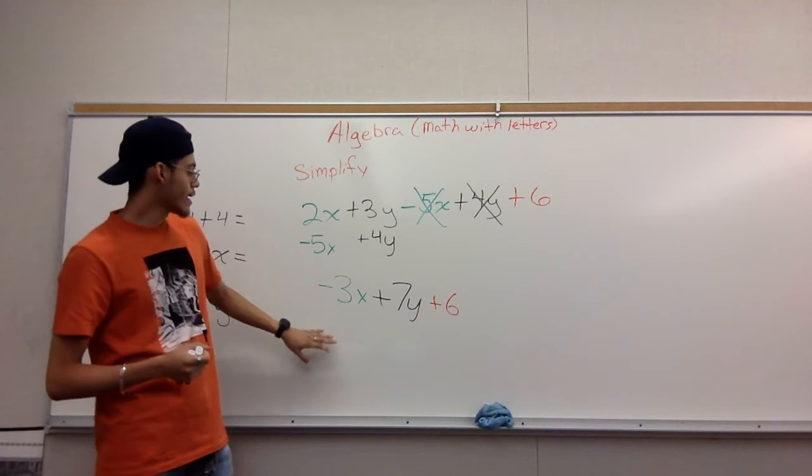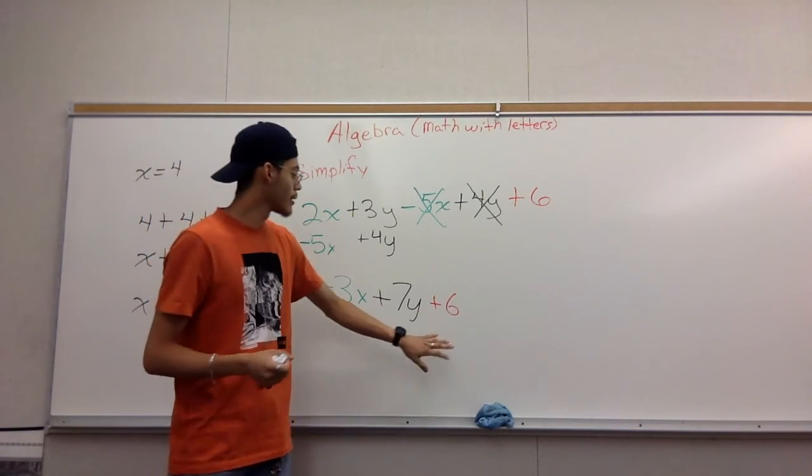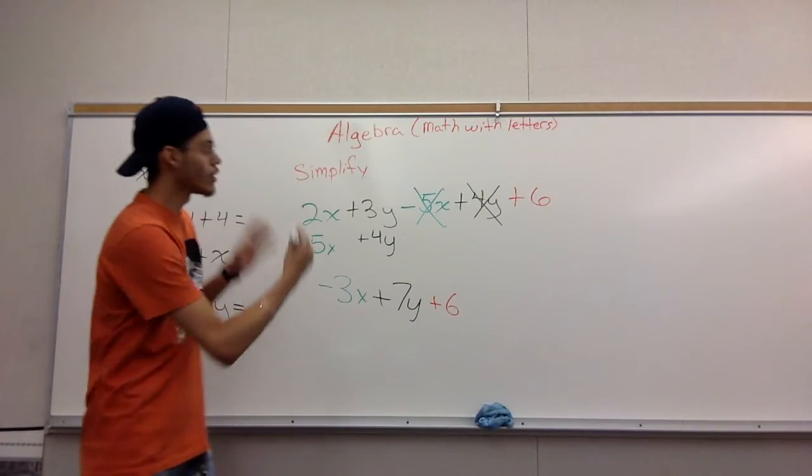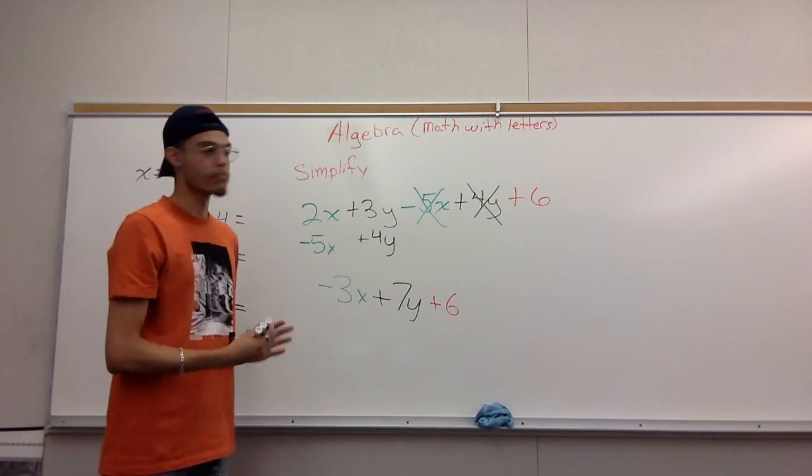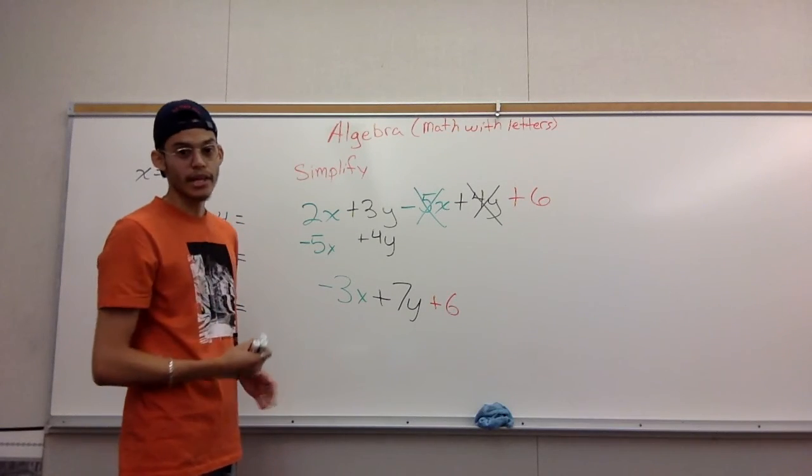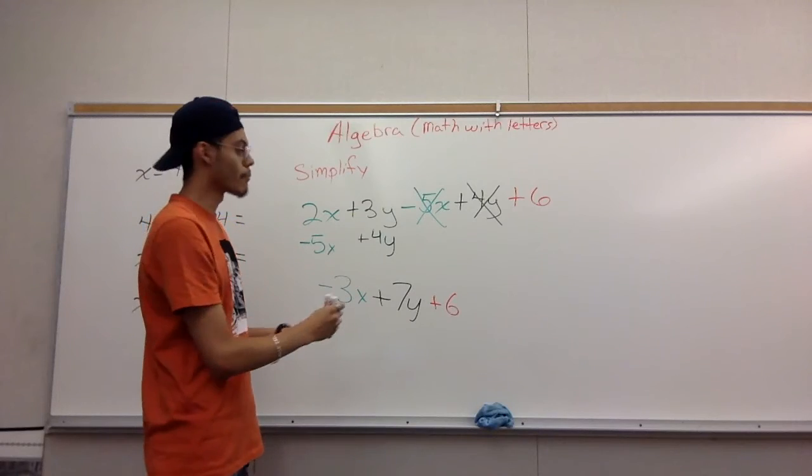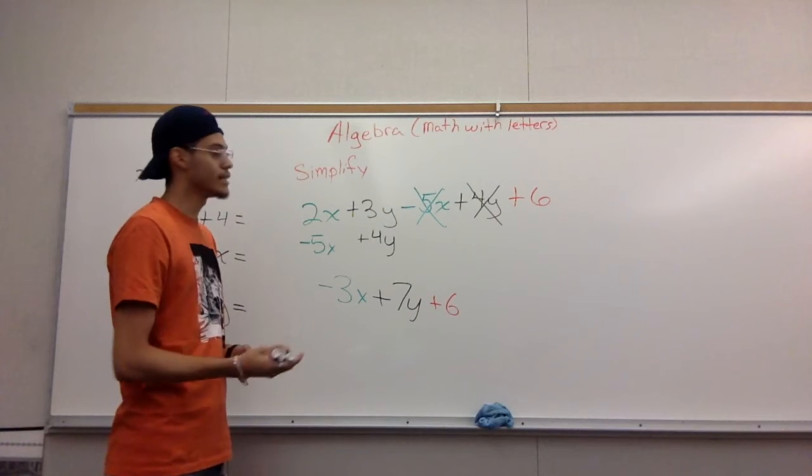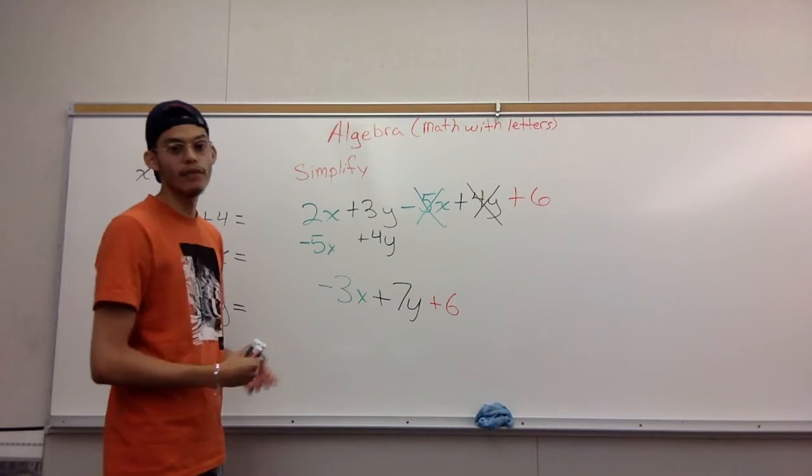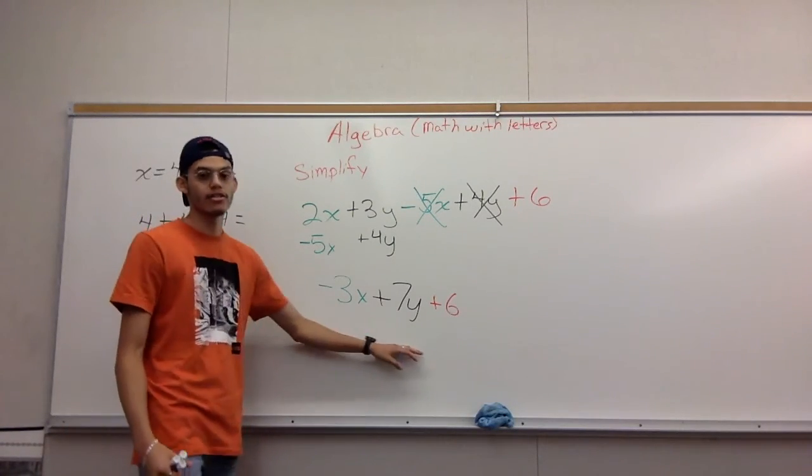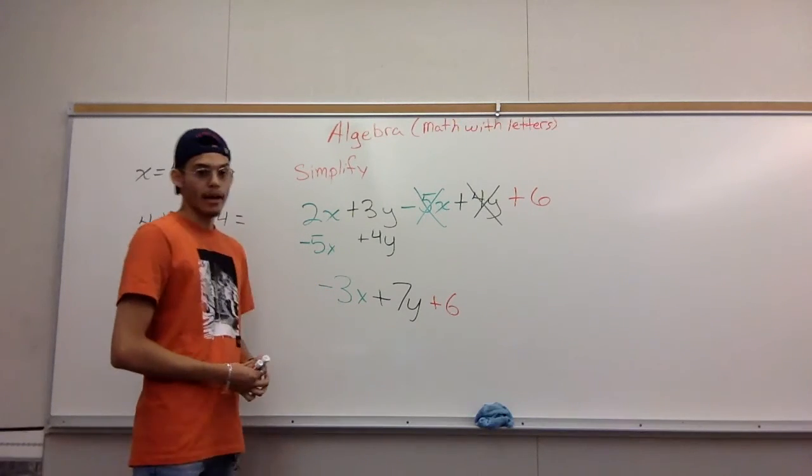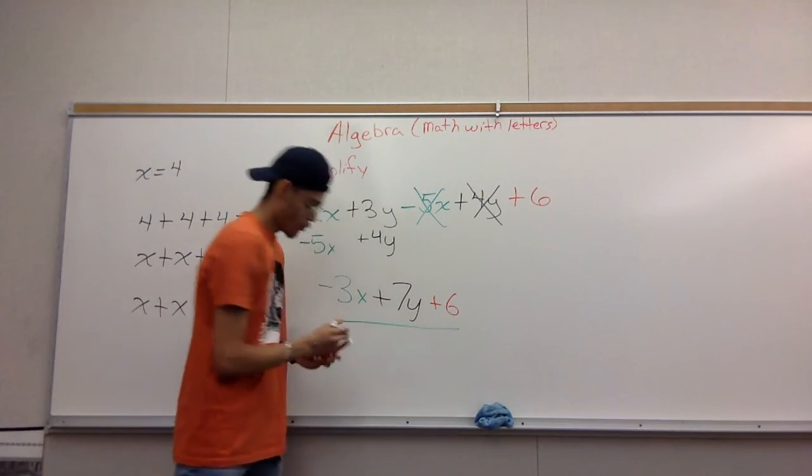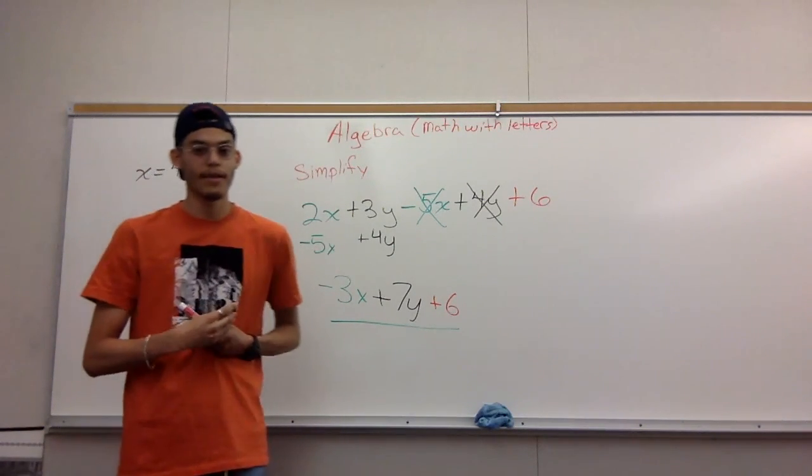So you're left with the answer: negative 3x plus 7y plus 6. The concept that you're trying to learn is you're making a longer problem into a smaller problem. Don't be afraid that there's not just one number as your answer. You're going to find this in a lot of your math classes where it's not as easy as just an answer of two or three. You're going to have letters inside your answer. So yeah, that is basically the answer: negative 3x plus 7y plus 6. I hope you guys understood the concept. Thank you very much.